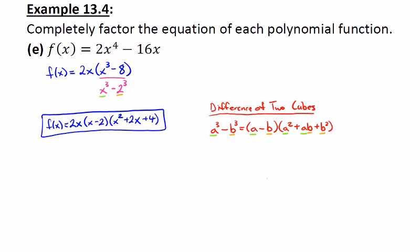When you work with the difference of two cubes, you will always create a binomial and a trinomial for these factors. It is never going to be possible for you to be able to factor x squared plus 2x plus 4 using trinomial factoring.